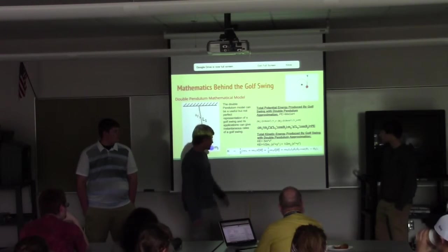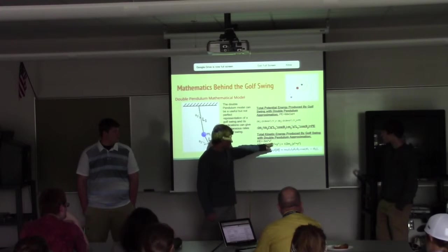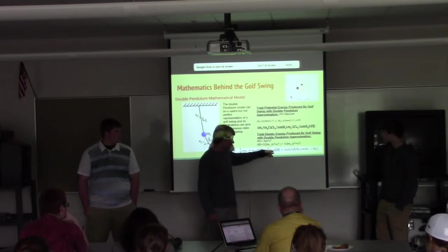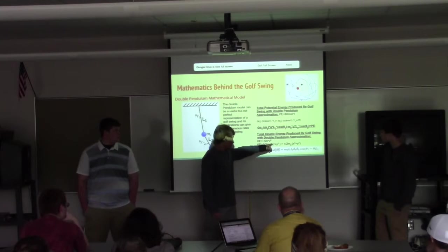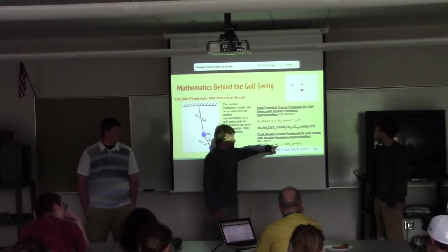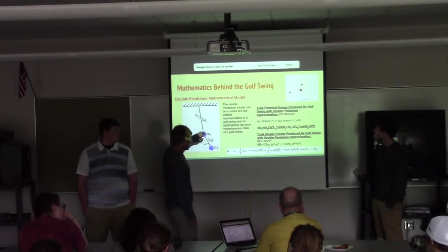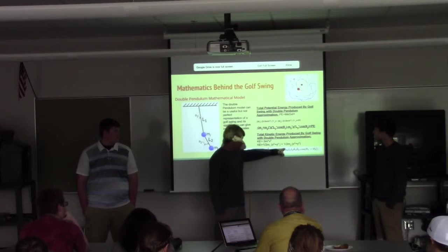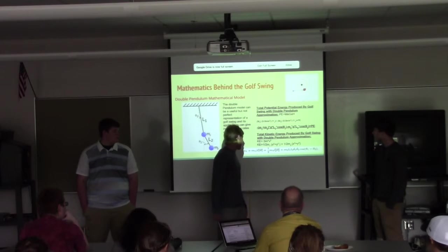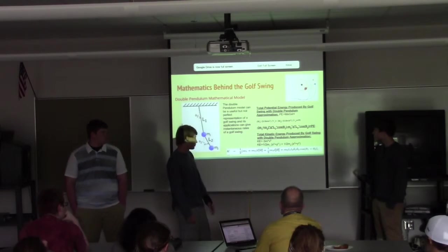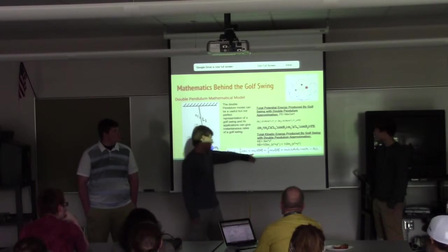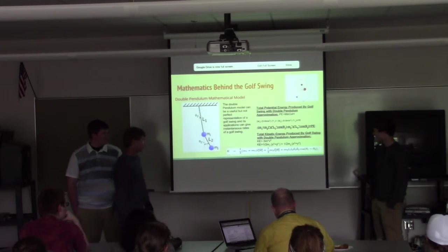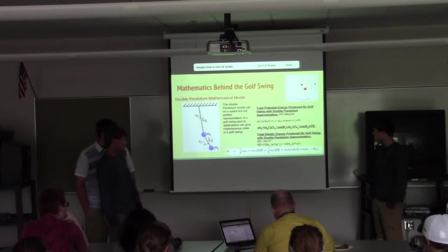What I did was I put this formula, the mass times gravity times height, in terms of this double pendulum model, and it gives you this formula for potential energy. Then you can find the kinetic energy produced by the golf swing, or what technically should be produced. A basic formula for calculating kinetic energy is one-half mass times velocity squared. When you put that again in terms of this double pendulum model - this is the first angle and this is the second angle to give you those angles at which the pendulum is swinging. You can see here it takes both of them into consideration because you have mass 1 and mass 2, or just mass 1 and you have the x and y components. When you differentiate, you get this.